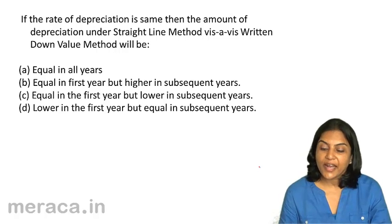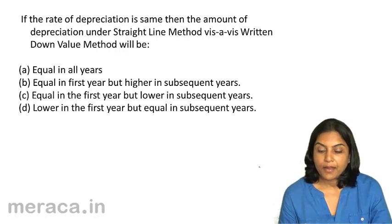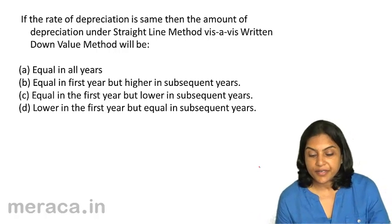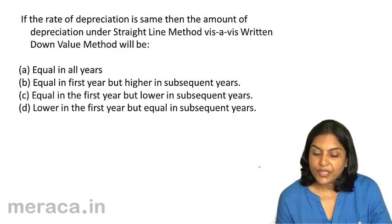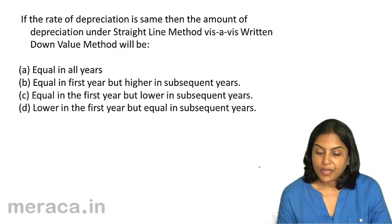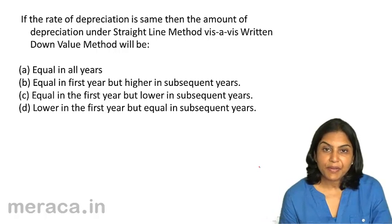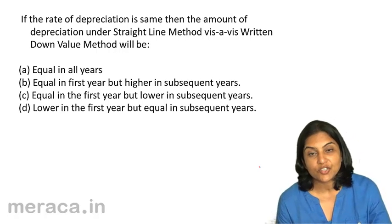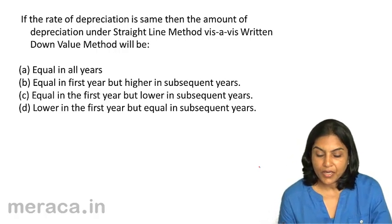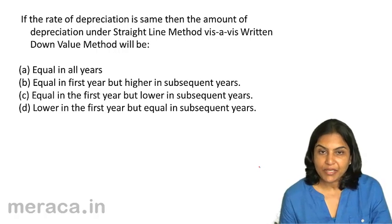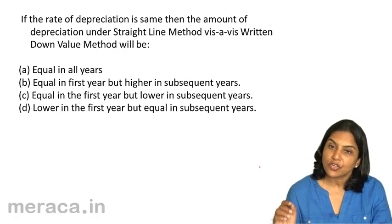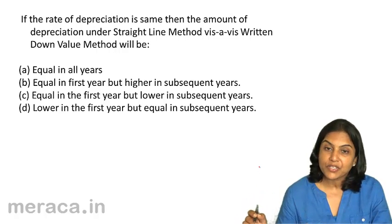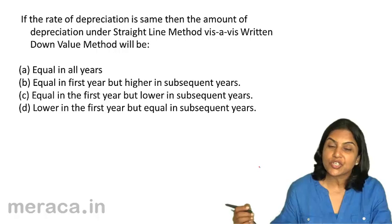The rate of depreciation is the same — say 10% under both straight line method and written down value method. In the first year, under both methods it is going to be the same. In the next year, under the straight line method it is 10% on the original cost, but under the written down value method it is 10% on the book value, which is a reduced value.